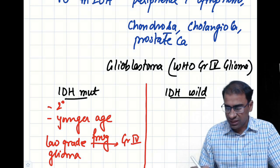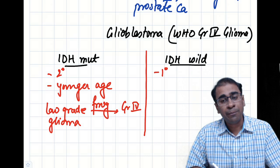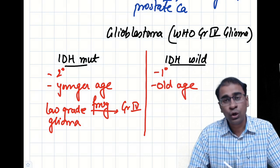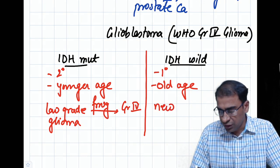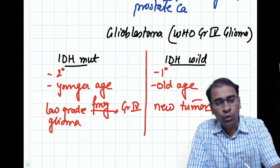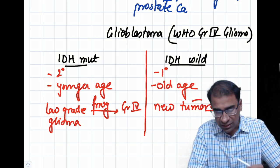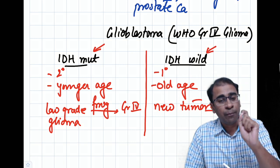If you compare this to the IDH wild type, those are called primary. They are seen in old age and they are new tumors.